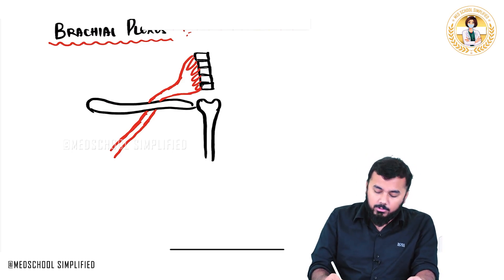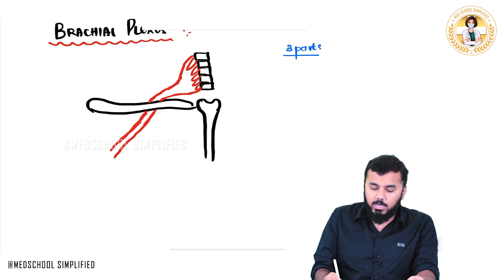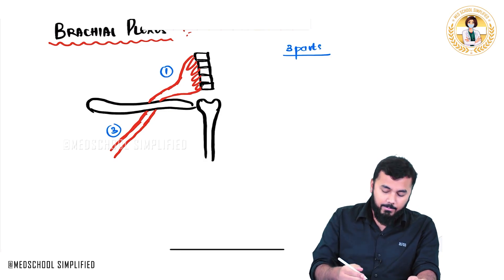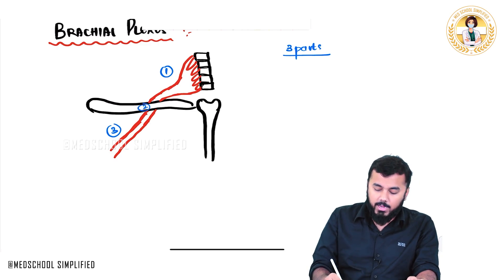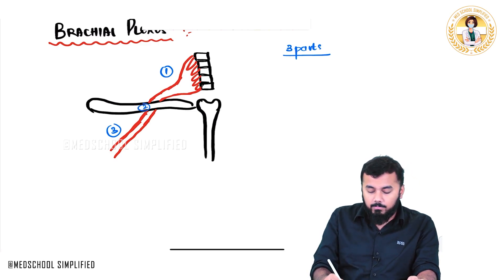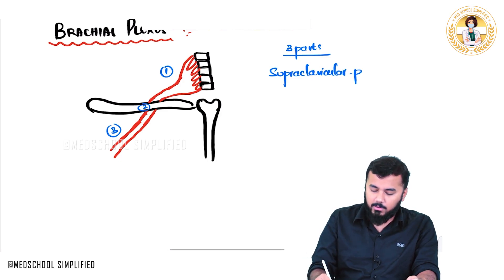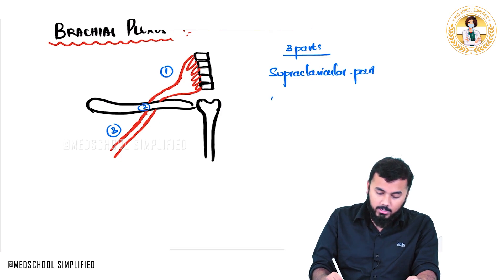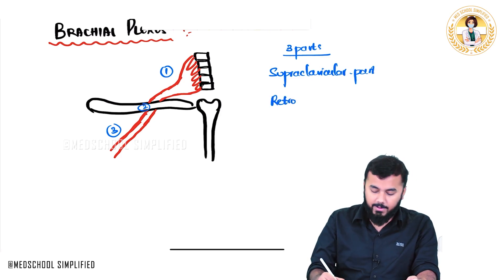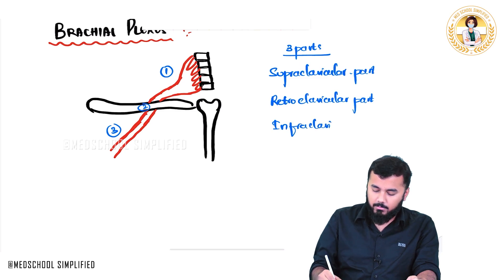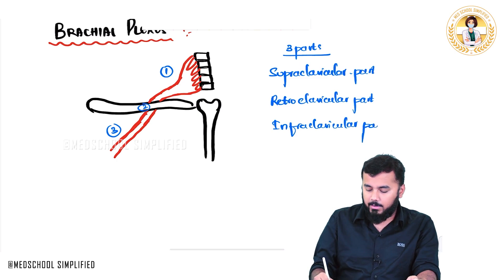This brachial plexus is of three parts. The first part above the clavicle is called the supra-clavicular part. Behind the clavicle we have the retro-clavicular part, and below that we have the infra-clavicular part.